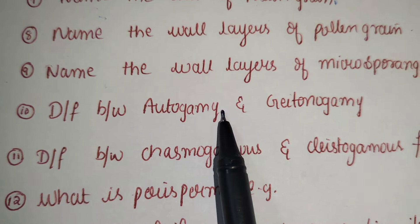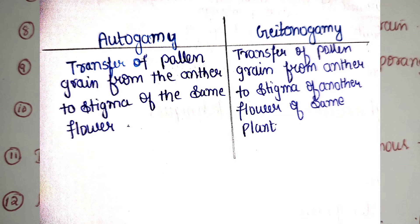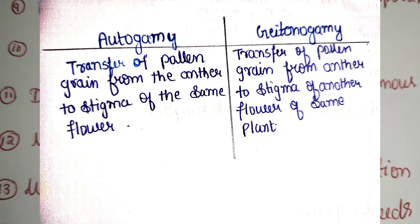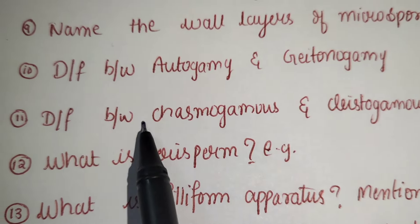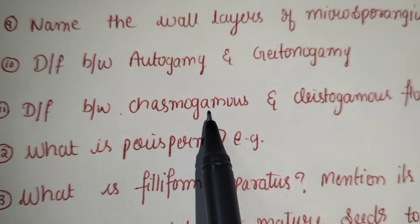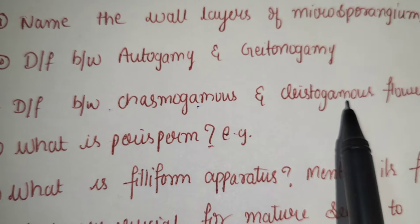Difference between autogamy and geitonogamy. Difference between chasmogamous and cleistogamous flowers.